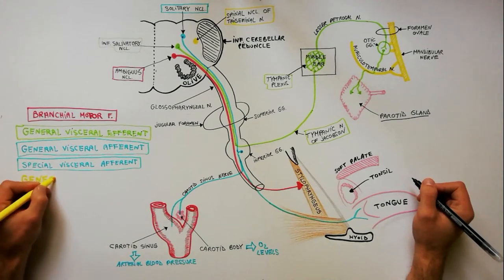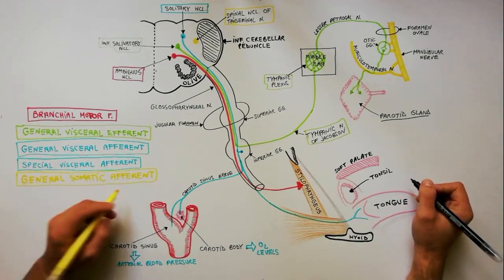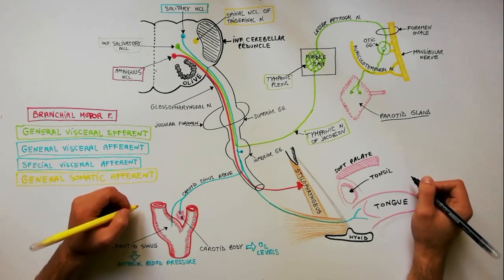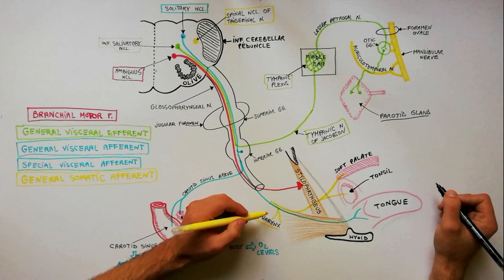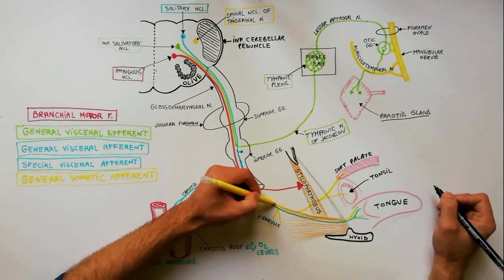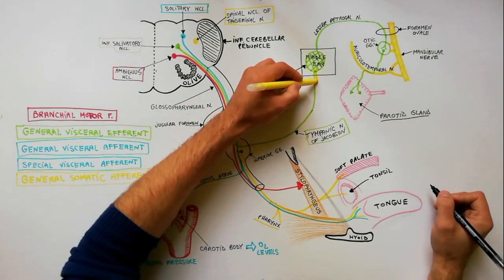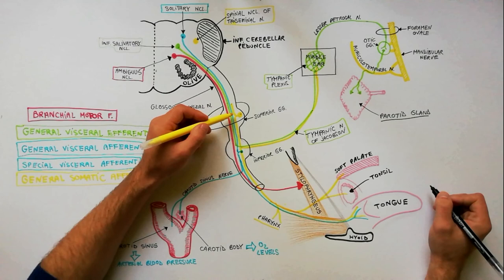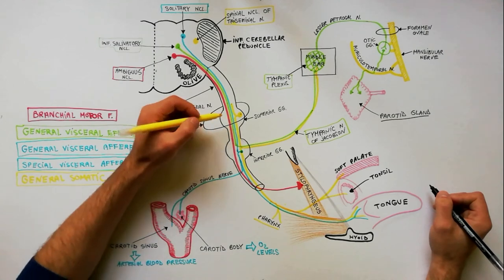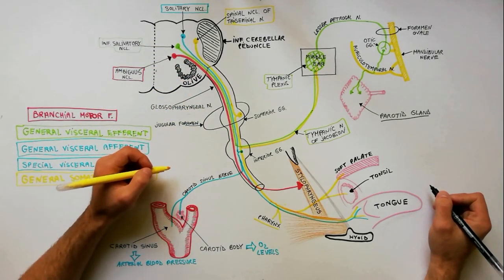With the yellow color we will indicate the general somatic afferent fibers. General sensory fibers for pain, touch, and temperature from the mucous membrane of the pharynx, tonsil, soft palate, and the posterior one third of the tongue have their nerve cell bodies in the superior glossopharyngeal ganglion. The tympanic nerve also carries this type of fiber from the middle ear, inner surface of the tympanic membrane, and part of the external ear. Central processes from the neurons of the superior glossopharyngeal ganglion travel further in the glossopharyngeal nerve to synapse in the spinal nucleus of the trigeminal nerve.